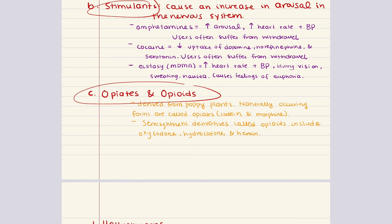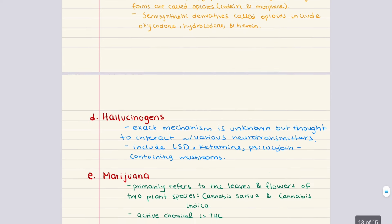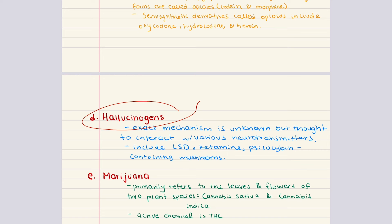The next category is hallucinogens — drugs like LSD, ketamine, and psilocybin mushrooms. The exact mechanism of most hallucinogens is unknown, but thought to involve a complex interaction between numerous neurotransmitters, especially serotonin. These drugs typically cause distortions of reality and fantasy, enhancing sensory experiences and introspection. Physiological effects include increased heart rate, increased blood pressure, dilation of pupils, sweating, and increased body temperature.